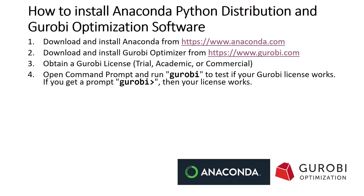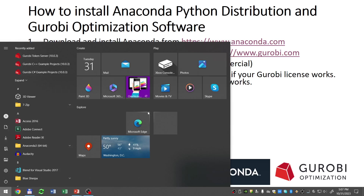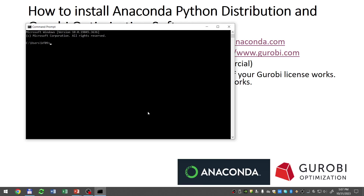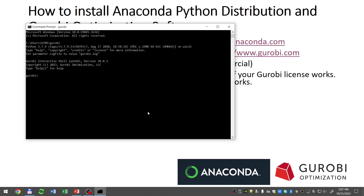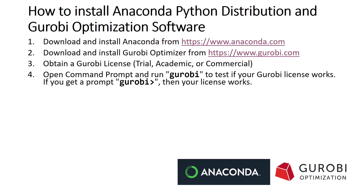The next step is to test if Gurobi and the Gurobi license work. To do this, we need to open the command prompt by going to the Start menu, typing cmd and pressing enter, and then typing the command gurobi. If you get an error and return to the Windows prompt, that means something is wrong with Gurobi or the Gurobi license. If you get the Gurobi greater-than prompt, that means Gurobi is working and the license is also working. We can type exit(), then press enter to close the window.